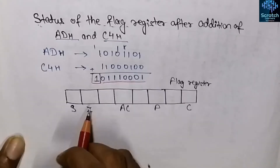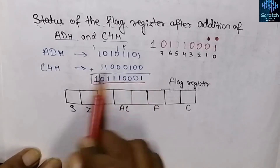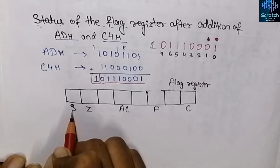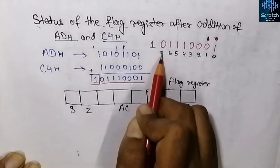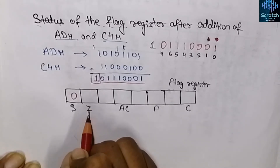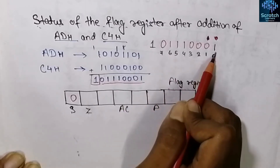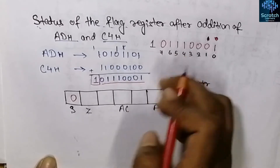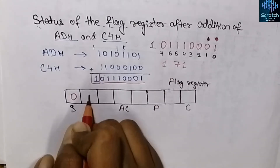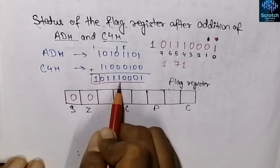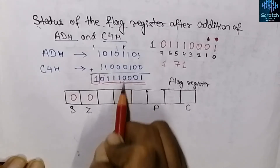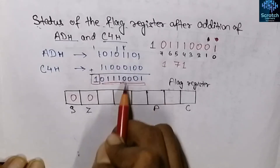Let's draw the flag register for this result. For the sign flag: the most significant bit D7 of the result is 0, so the sign flag contains 0. For the zero flag: the result is not zero — it equals 71 hex — so we store 0 here. For the auxiliary carry flag: a carry was shifted from bit D3 to D4 during the addition, so it is set to 1.